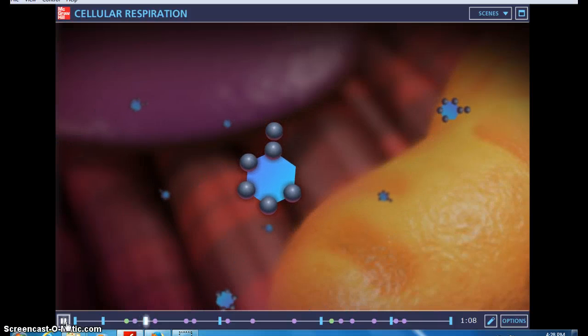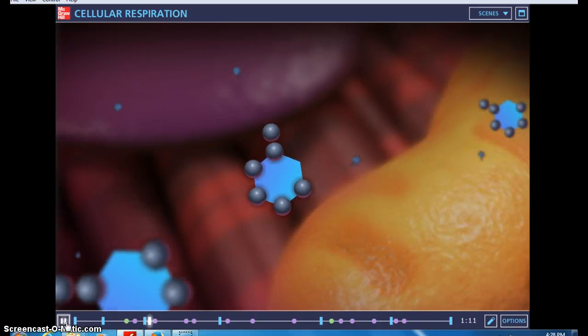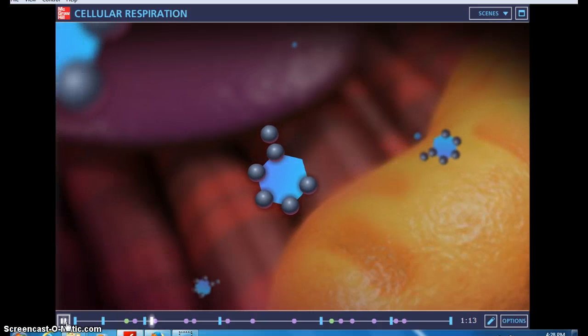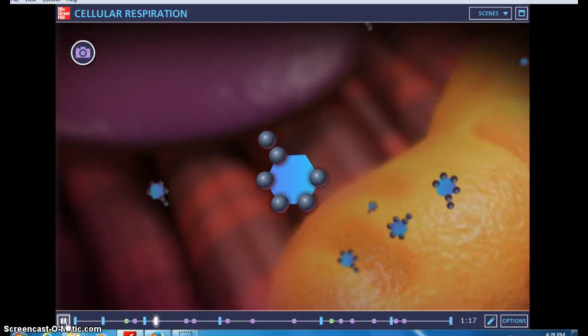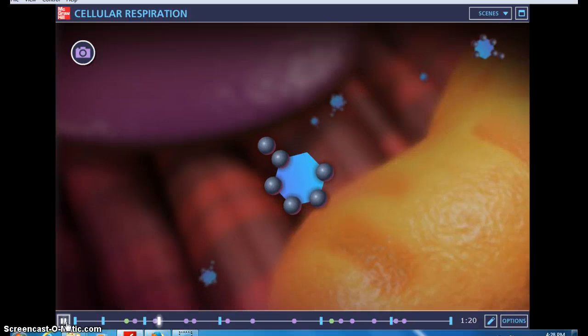Glycolysis literally means splitting sugars, and it is the first step of cellular respiration occurring in the cytoplasm of the cell. Glycolysis consists of two distinct phases, an energy investment phase and an energy harvesting phase.